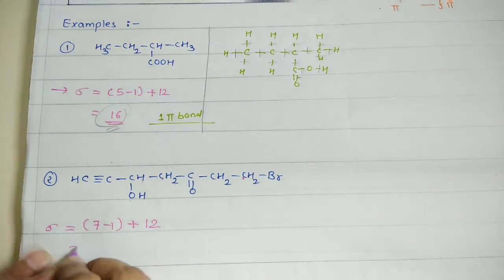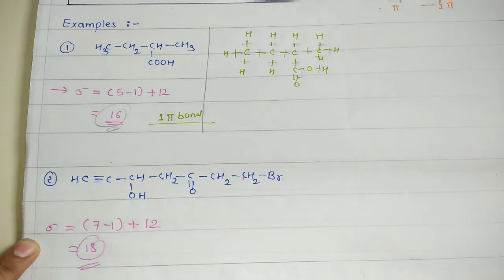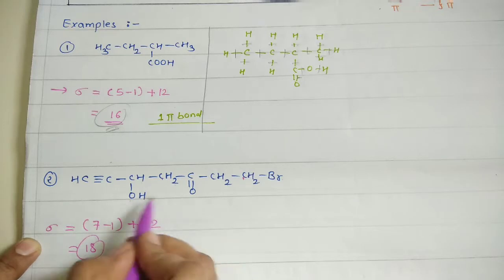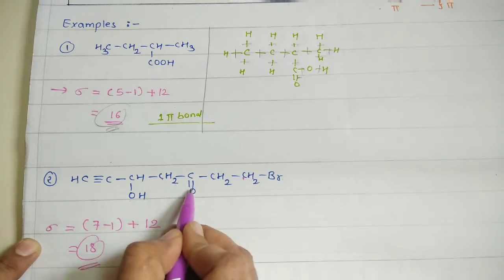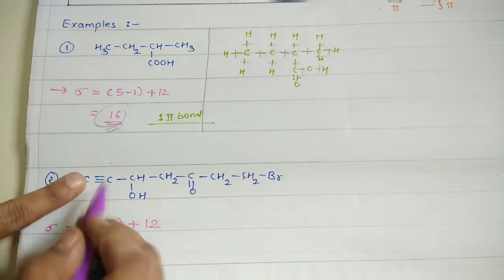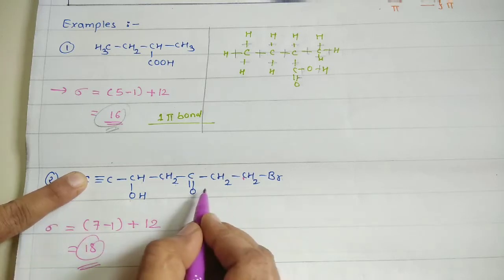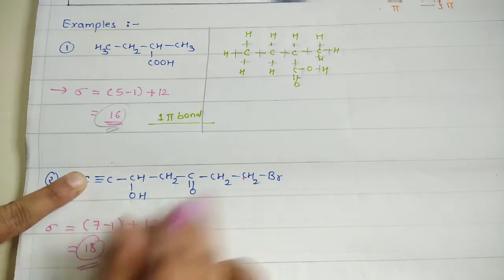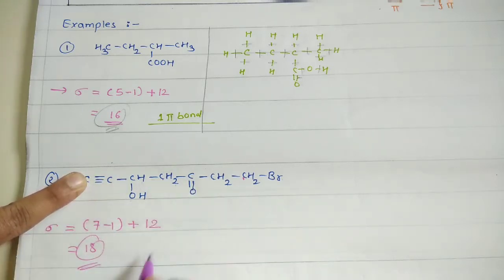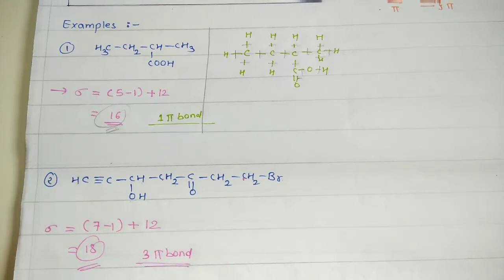Solving the formula gives you 18 sigma bonds. Now, how many pi bonds are there? Looking at this structure, there is 1 double bond here and a triple bond here. A triple bond gives 2 pi bonds, and the double bond gives 1 pi bond, so total is 2 plus 1 equals 3. So 3 pi bonds are going to be present in the given structure.